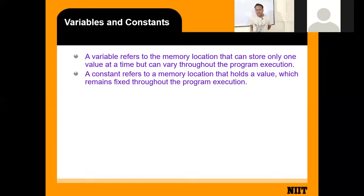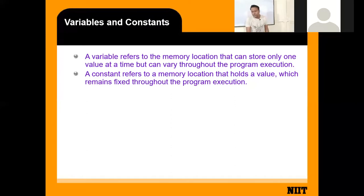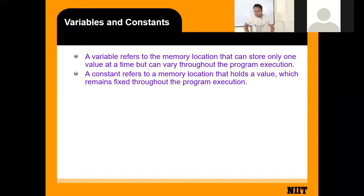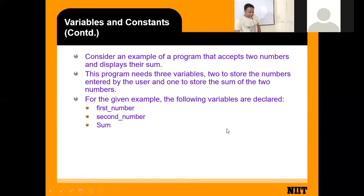A variable stores a value that can change throughout program execution. A constant, on the other hand, refers to a memory location that holds a value which remains fixed throughout the program execution — like a hostel room assigned only to you for a specific time period. That value never changes.